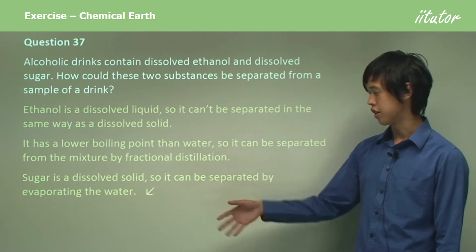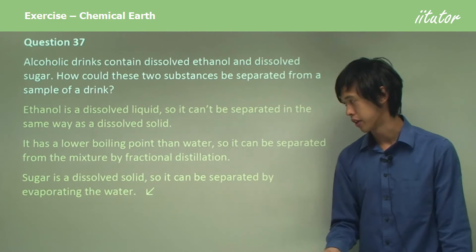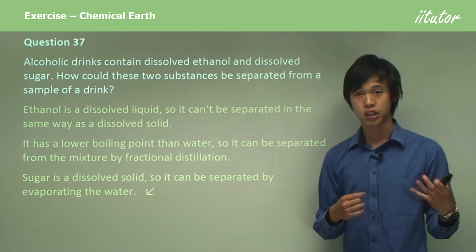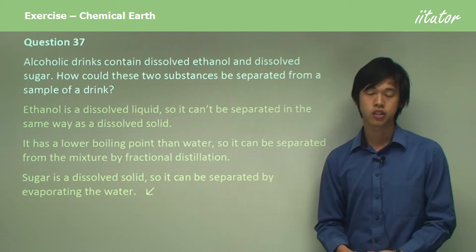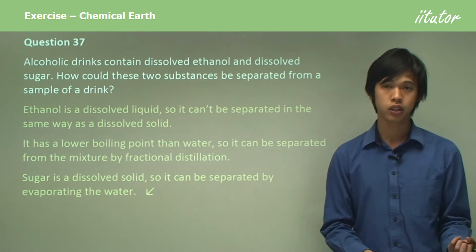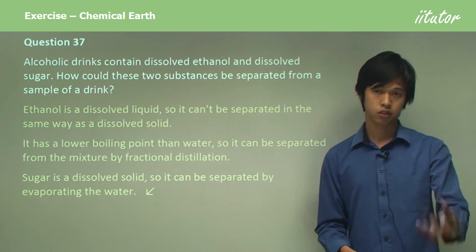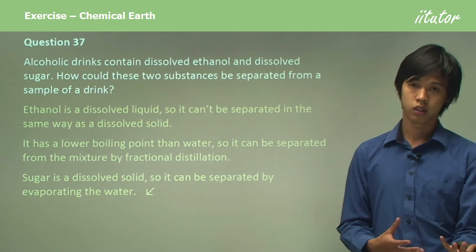And the sugar is a dissolved solid, so it can be separated by evaporating the water. So once you've got the ethanol out, you can just evaporate the remaining liquid, and that will give you your sugar back.